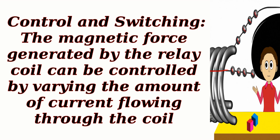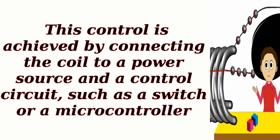Control and switching: The magnetic force generated by the relay coil can be controlled by varying the amount of current flowing through the coil. This control is achieved by connecting the coil to a power source and a control circuit, such as a switch or a microcontroller.